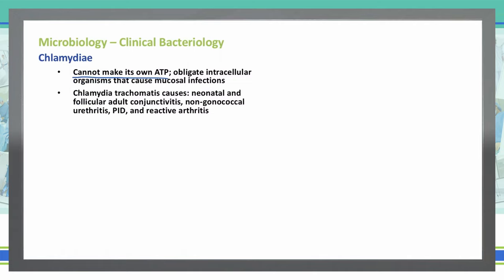Chlamydia trachomatis causes neonatal and follicular adult conjunctivitis, as well as non-gonococcal urethritis, pelvic inflammatory disease, and reactive arthritis.